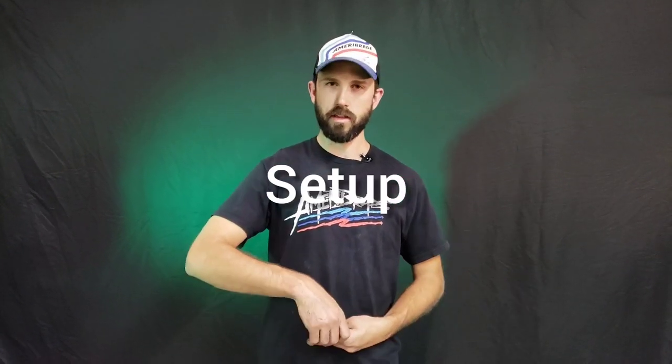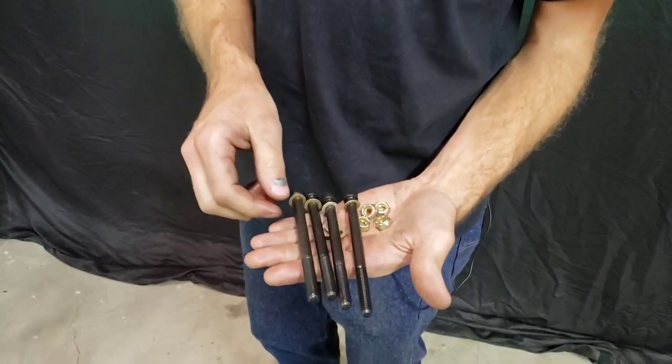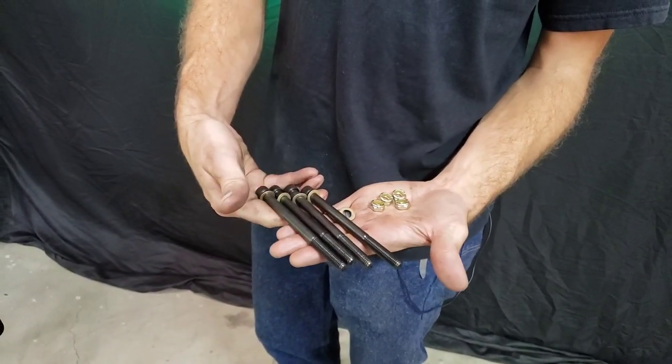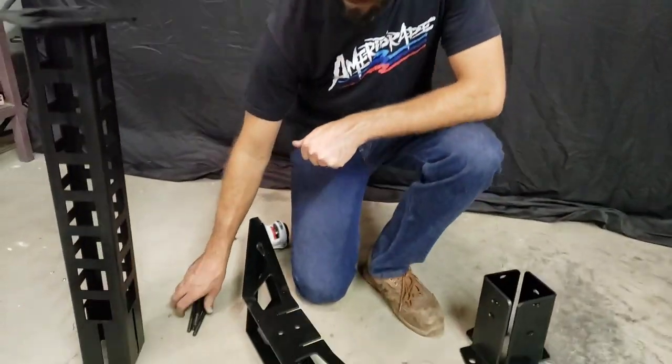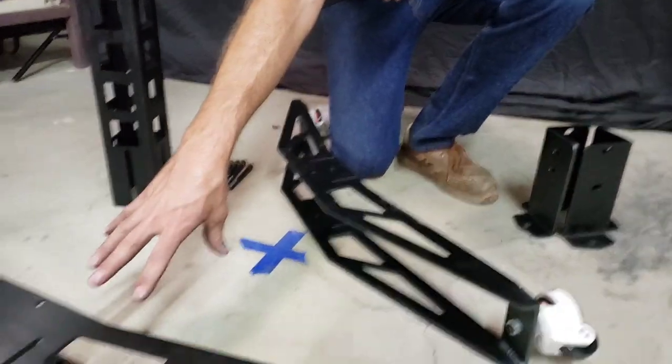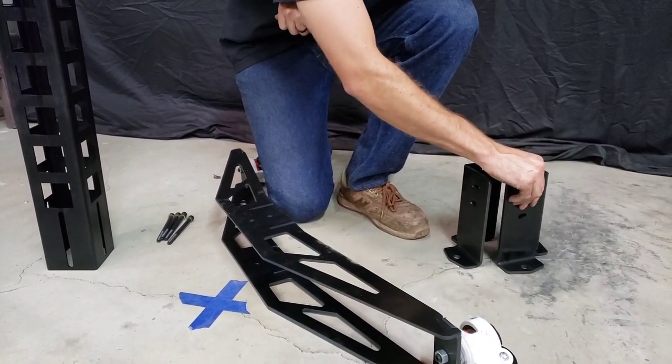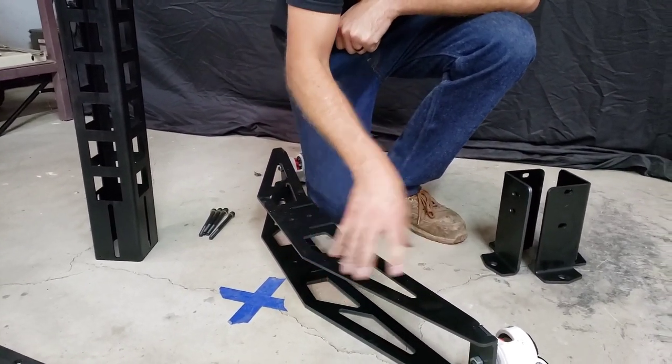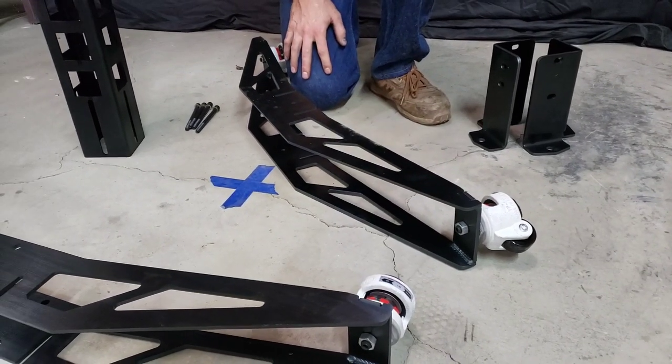All right, when you go to set up your pedestal stand, make sure you got everything that it's supposed to come with. The hardware kit should include four of these long 3/8 bolts, four lock nuts, and a total of eight flat washers. And then you'll have either two sets of legs or you'll have these bolt down feet if that's what you chose. Your legs will also come with feet, either these leveling casters or rubber leveling feet based on what you picked.